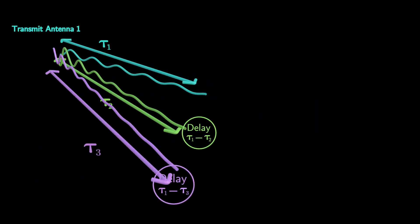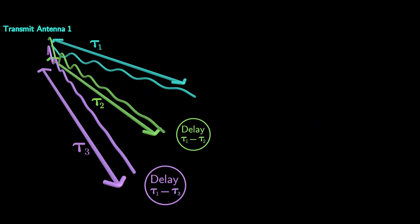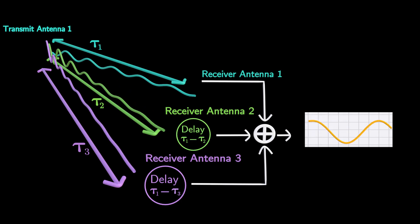Similarly, multiple receiver antennas can also apply beamforming by coherently combining signals to enhance the signal strength.